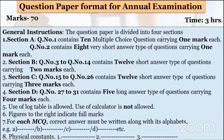Section B contains Question 3 to Question 14 — 12 short answer type questions carrying 2 marks each. Out of 12, you have to attempt 8. Section C, Question 15 to Question 26, contains 12 short answer type questions carrying 3 marks each. Out of 12, you have to attempt only 8, same as Section B. Section D, Question 27 to 31, contains 5 long answer type questions carrying 4 marks each. Out of 5, you have to attempt only 3.